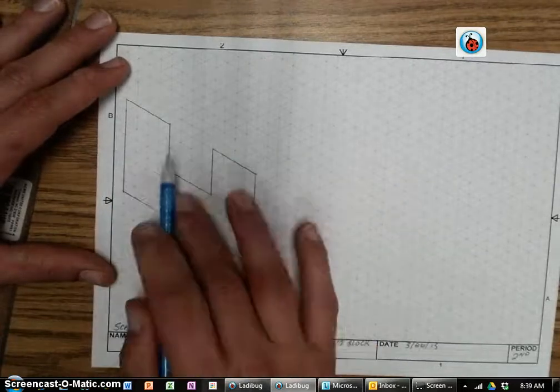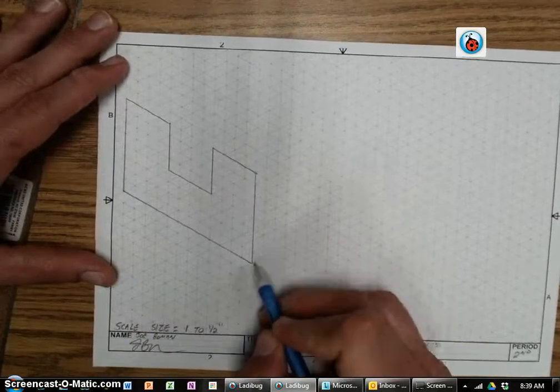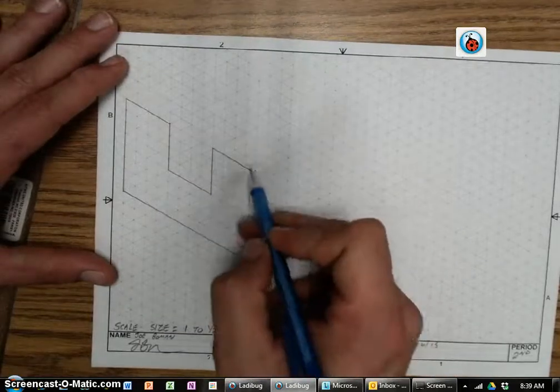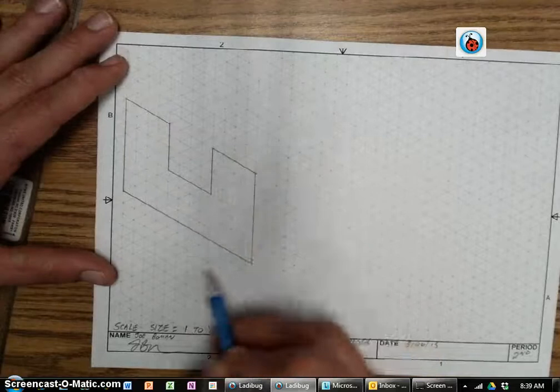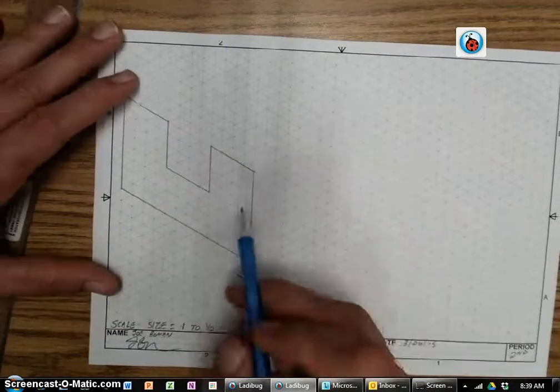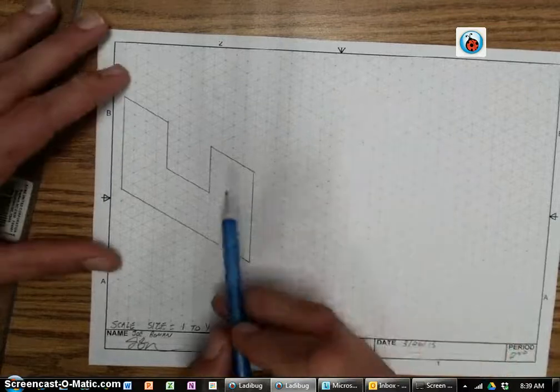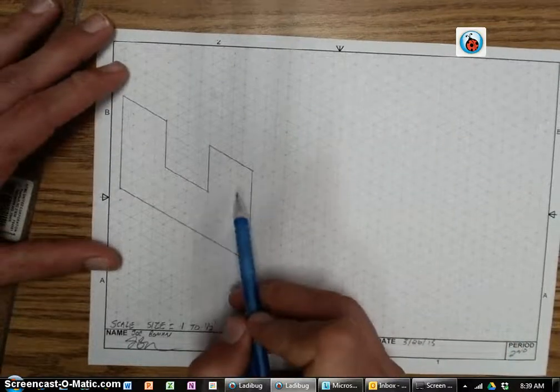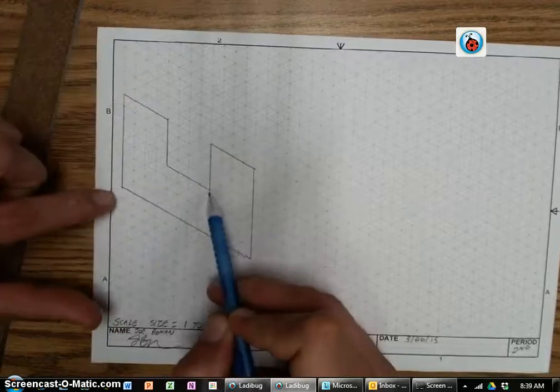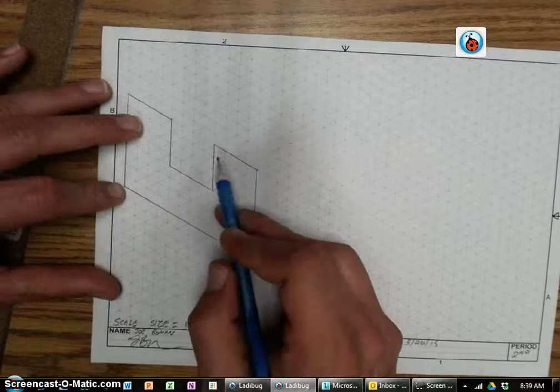Now that we have our front view, our next step is to draw our depth or our width, however you refer to it, on the Z-axis. Remember, every corner that I change direction on the X and the Y needs a Z. Except for ones that are covered up. So like this corner right here, it's covered up by my tower. This corner right here is covered up by my shape. So I leave these 2 corners out. But everything else needs to have a Z.